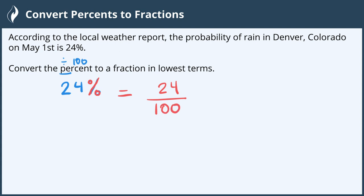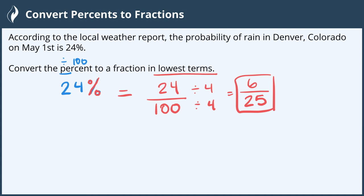Just like the definition: per — divide — cent — 100. Now it's asked us to reduce this to lowest terms. I can see that both of these are divisible by 4. 24 divided by 4 is 6. 100 divided by 4 is 25. And nothing further goes into both the numerator and the denominator, so this is as reduced as it goes.